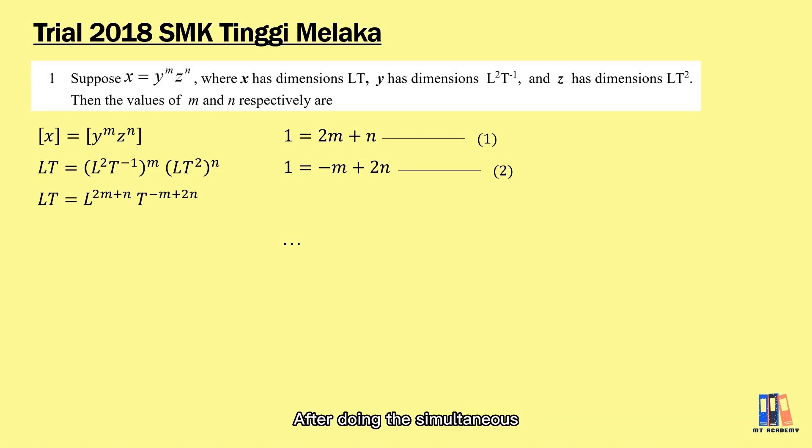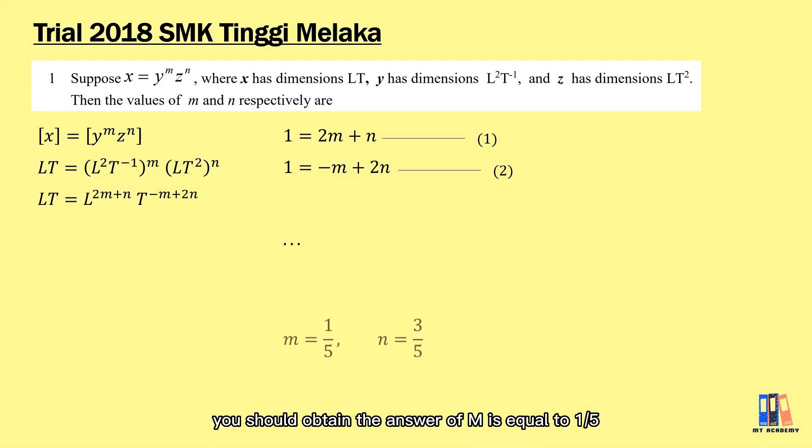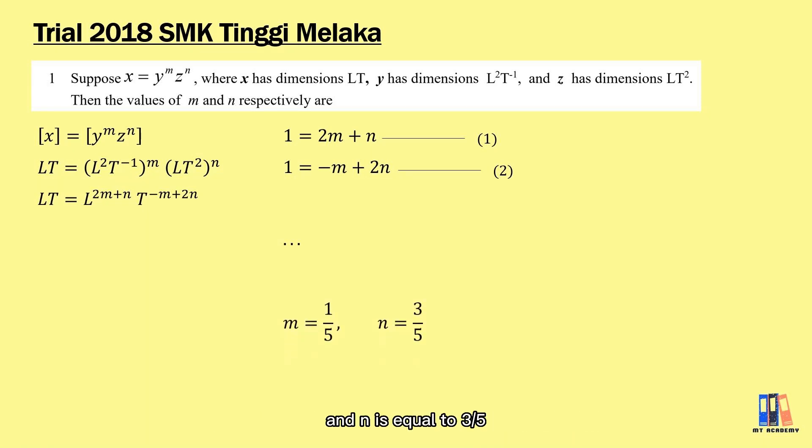After solving the simultaneous equations, we obtain m equals 1 over 5 and n equals 3 over 5.